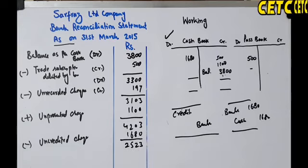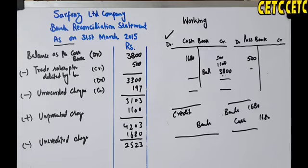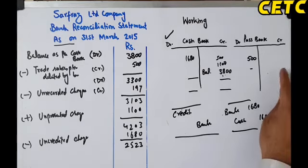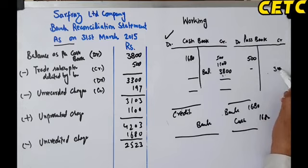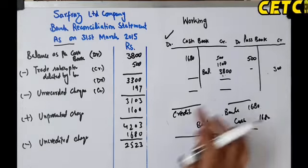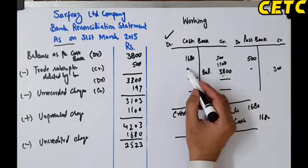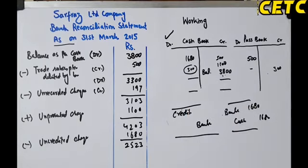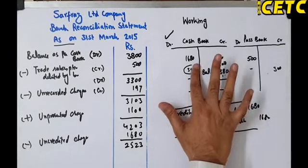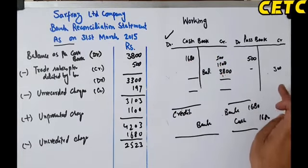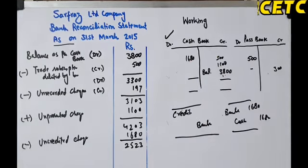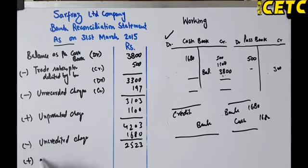Last item: interest on investment collected by bank — rupees 300 — not yet recorded in the cash book. The bank earned interest on our investment and credited our account with Rs. 300. Our cash book hasn't reflected this yet. The bank credited it; we should have debited our book — but we didn't. So now we add it. Write: Add — Interest on investment — Rs. 300.